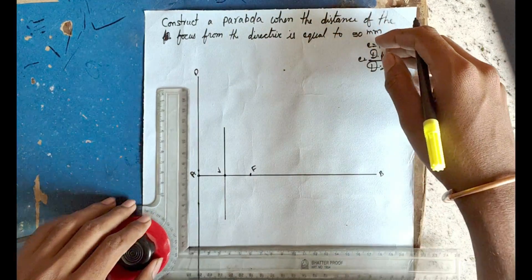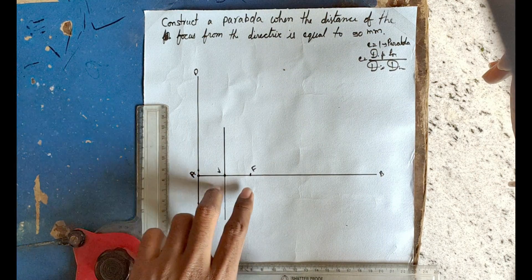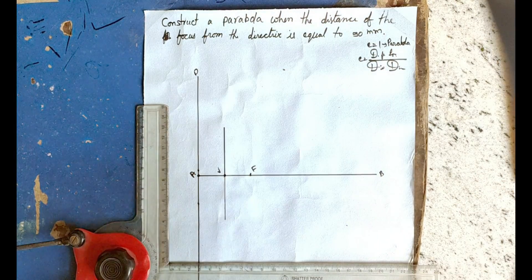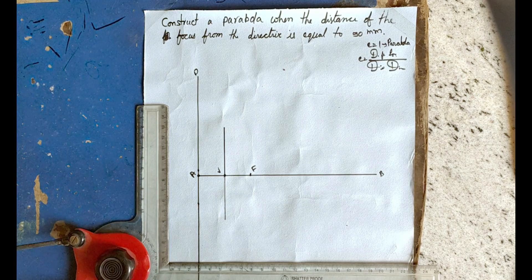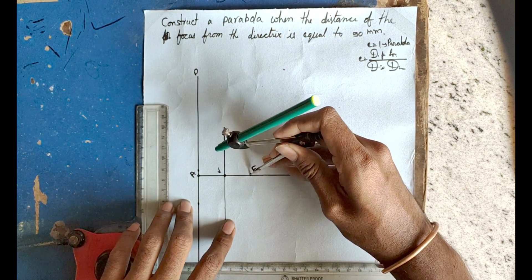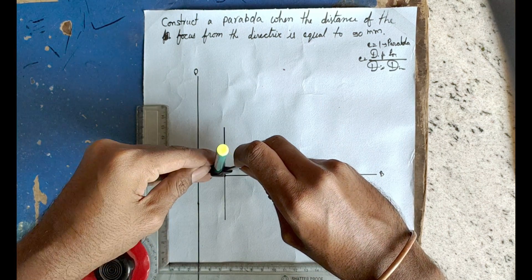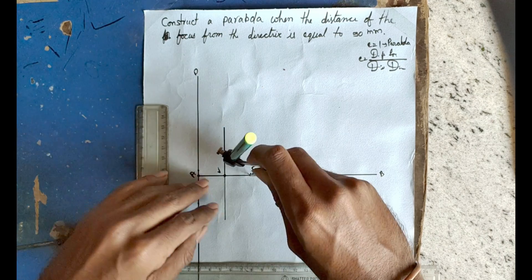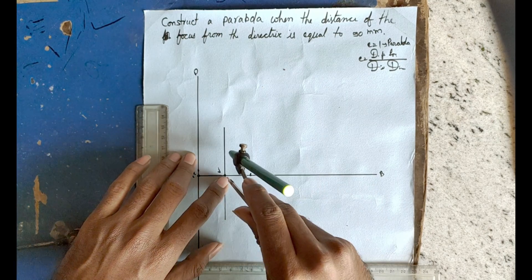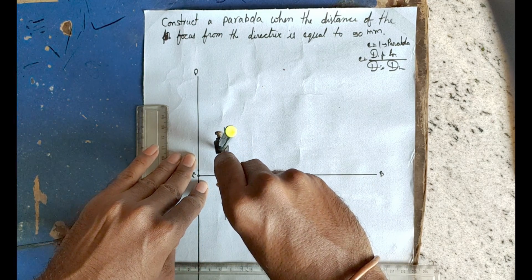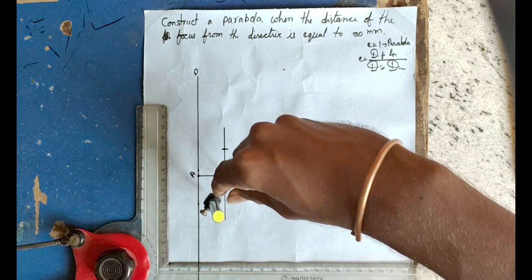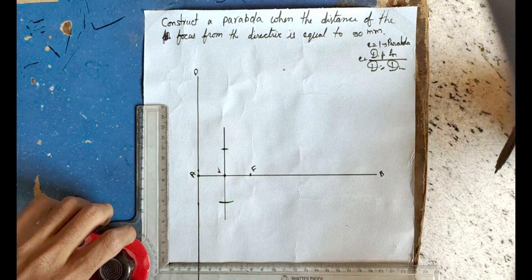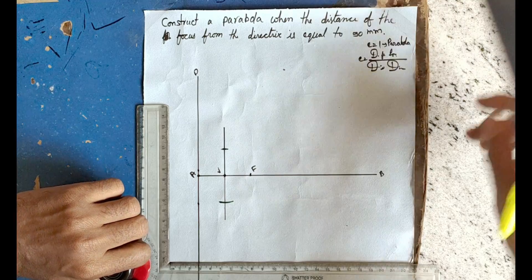From vertex V, measure the radius V to F. Draw a vertical line through V. Where this cuts the vertical line, mark those intersection points. From point A, join the points and draw the construction lines.